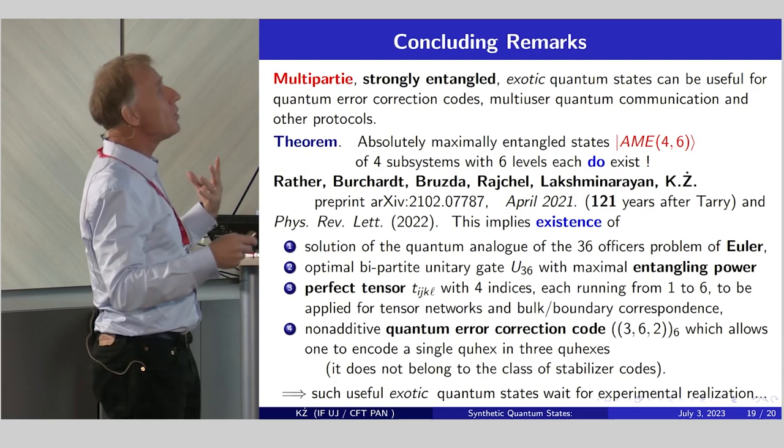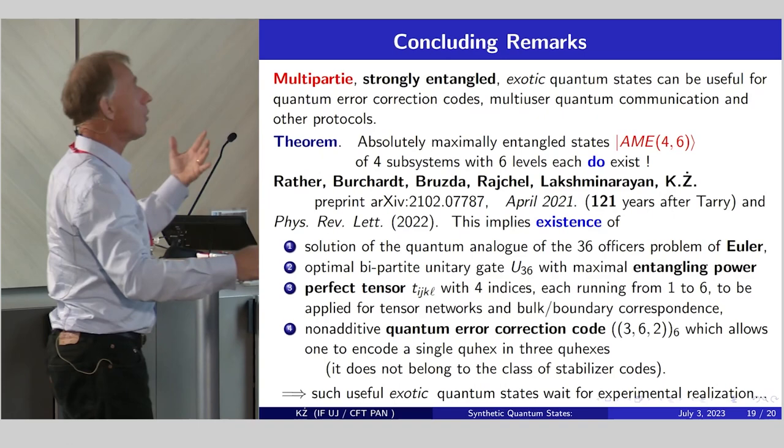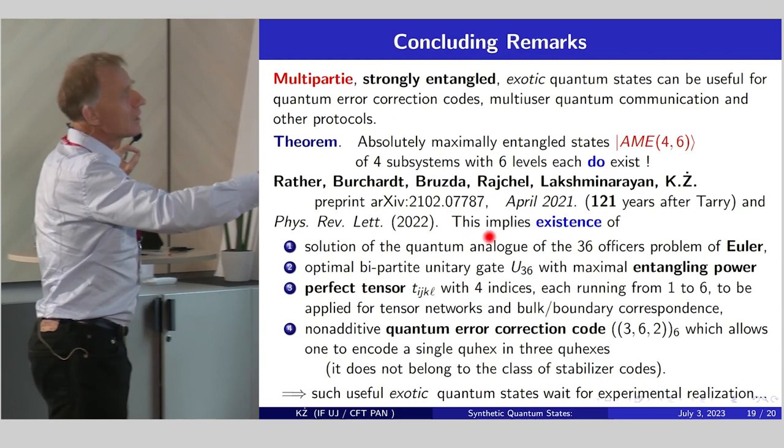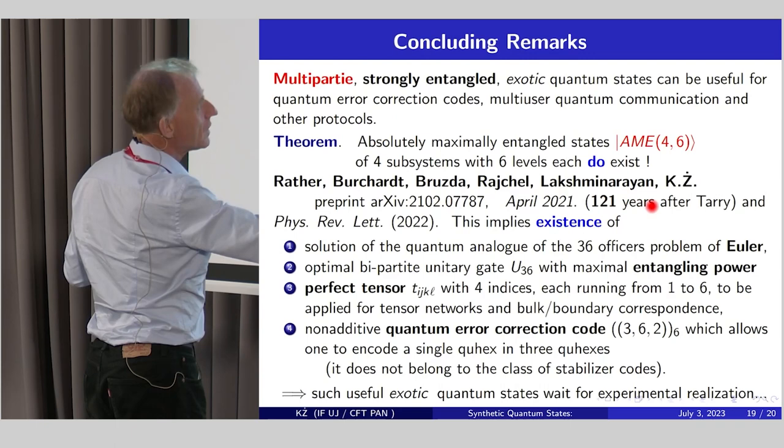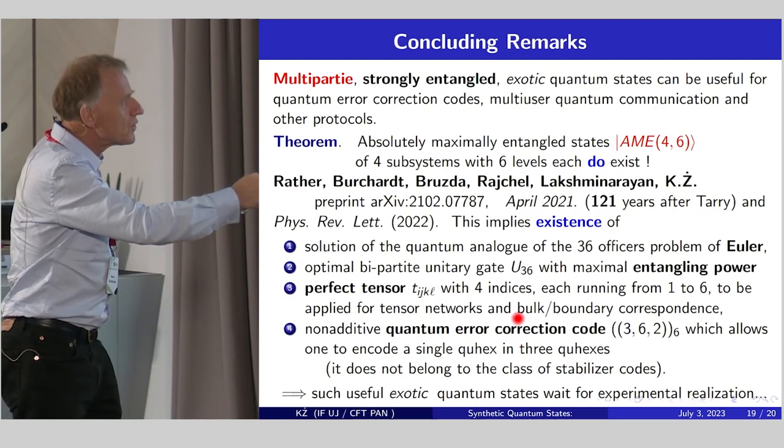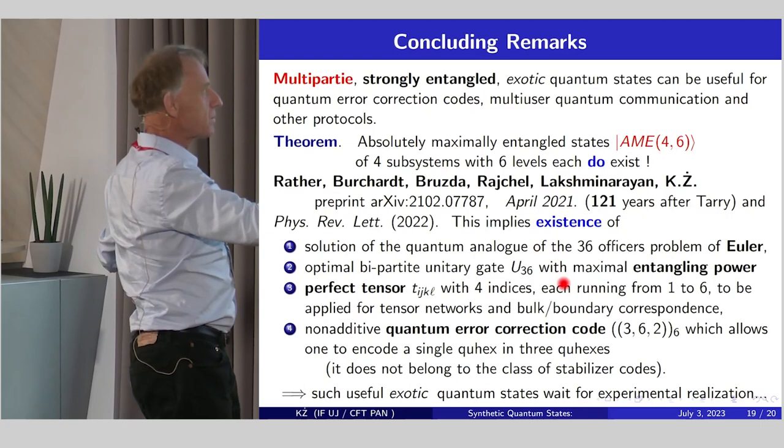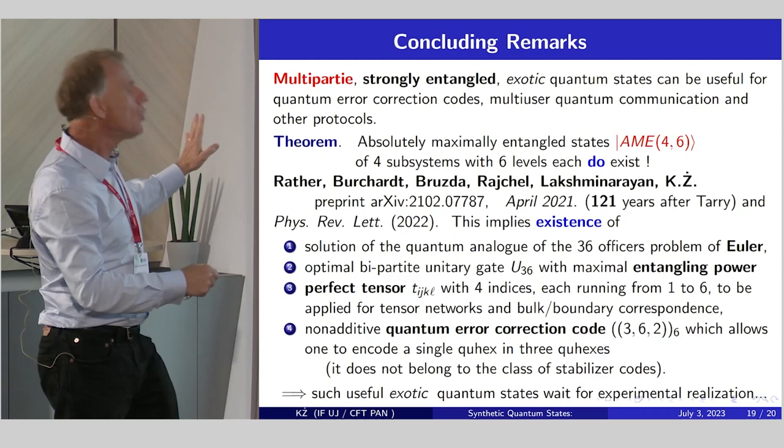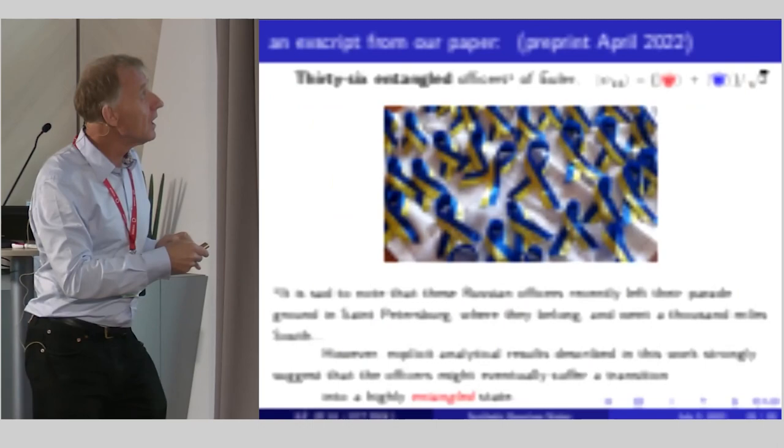Multipartite strongly entangled, let's say, exotic states can be useful for many different applications. For instance, quantum error correction codes, quantum communication, and so on. A simple statement is that such states do exist in the case of four subsystems which are six levels each. And our result was obtained in 21, exactly 120 years later after Terry, which obtained his result 121 years later after Euler. And this result implies existence of solution of this quantum analog. It's not a classical problem of Euler, quantum analog of the 36-officers problem of Euler, and optimal bipartite unitary gate with maximal entangling power, such a perfect tensor with four indices, and non-additive quantum error correction code. So I hope such useful exotic states should be realized in an experiment.